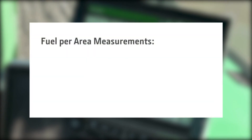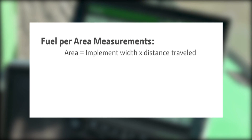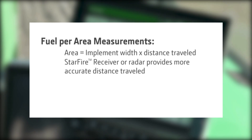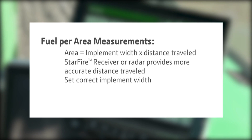There are a few things to remember when using the fuel per area measurements so that you get accurate information. The first is that the area is calculated based on the implement width and distance traveled. If the tractor is not equipped with a radar or StarFire receiver, then the tractor may report more area worked than there actually was. If the implement width is not set correctly, the area measurement will also be off.